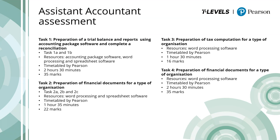In Task 2, students will prepare financial documents related to the given organisation. Task 2 is split into three: 2a — preparing journal entries; 2b — preparing a statement of profit or loss and appropriation account; and 2c — preparing a statement of financial position. A resource document and digital answer booklet will be provided. This task is worth 22 marks, with a duration of 1 hour 35 minutes, timetabled by Pearson.